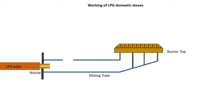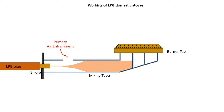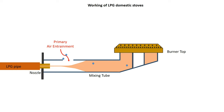When we switch on the supply of LPG, the nozzle converts the pressure energy head into the velocity head. The high velocity of LPG is then directed towards the mixing tube. Due to the resulting low pressure zone, atmospheric air is sucked inside the mixing tube through the air opening — this is called primary air. The homogeneous mixture of air and fuel is then sent towards the burner top.